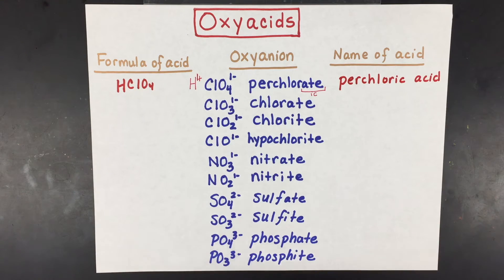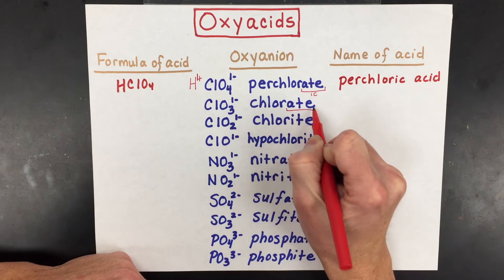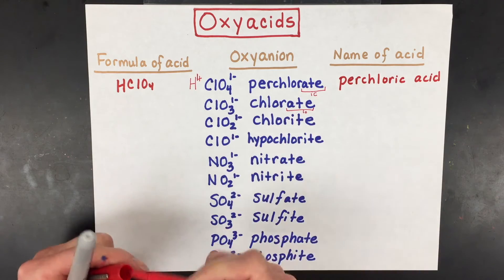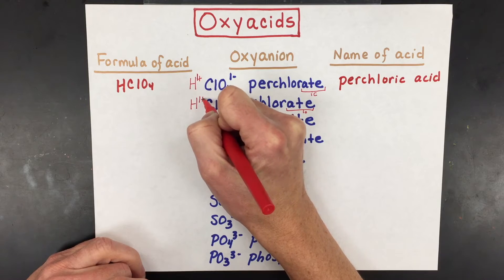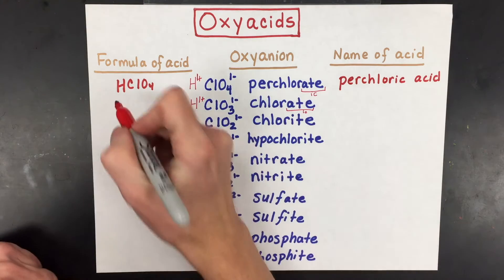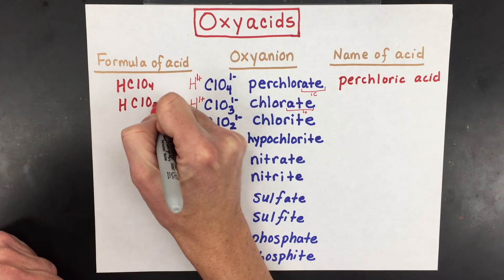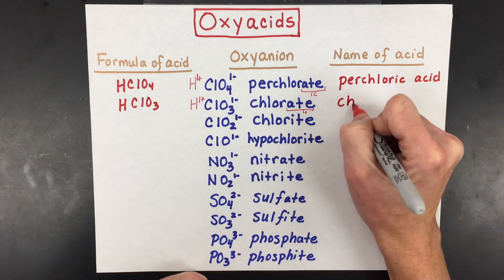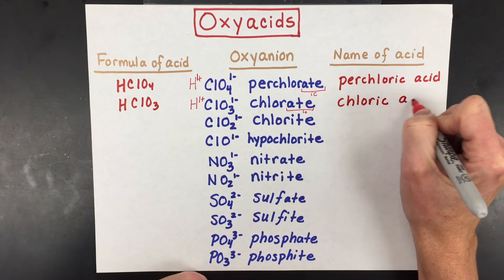If you have the chlorate ion instead of perchlorate, you still turn 'ate' into 'ic' and still add a hydrogen ion. Because it's a one-plus and a one-minus, the formula would be HClO3, and the name of it would be chloric acid.